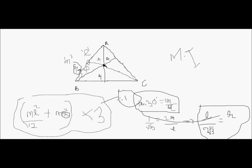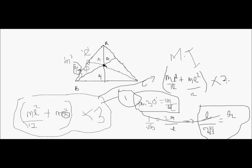Now substituting this value of r into the equation, we get (ml²/12 + m·(l/(2√3))²) × 3, which simplifies to ml²/12 + ml²/12, multiplied by 3, giving a final answer of ml²/12. So the moment of inertia of the equilateral triangle about its center is ml²/12.